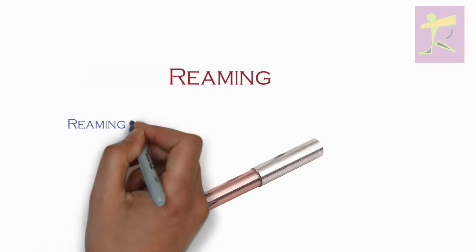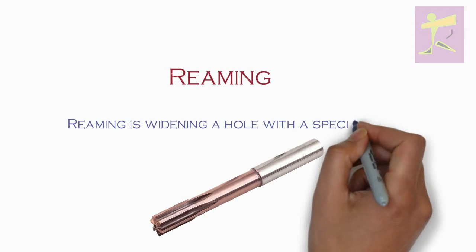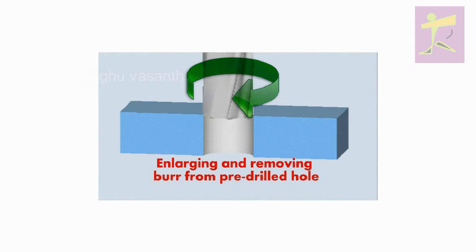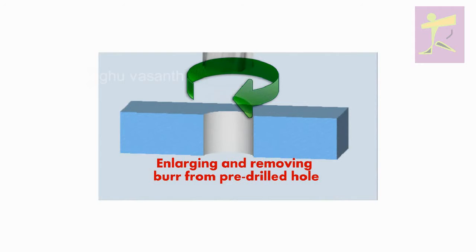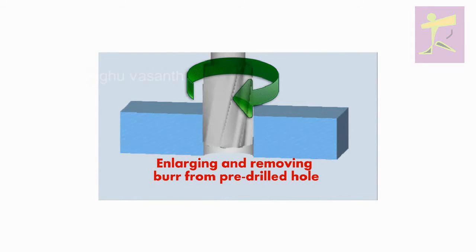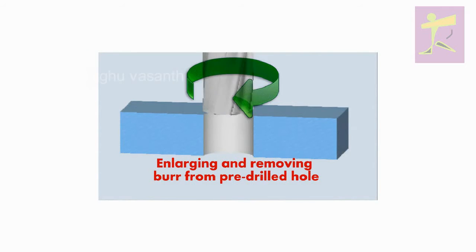Reaming is widening a hole with a special tool. A reamer is a type of rotary cutting tool used in metalworking. Reamers are designed to enlarge the size of a previously formed hole by a small amount, but with a high degree of accuracy, to leave smooth sides.